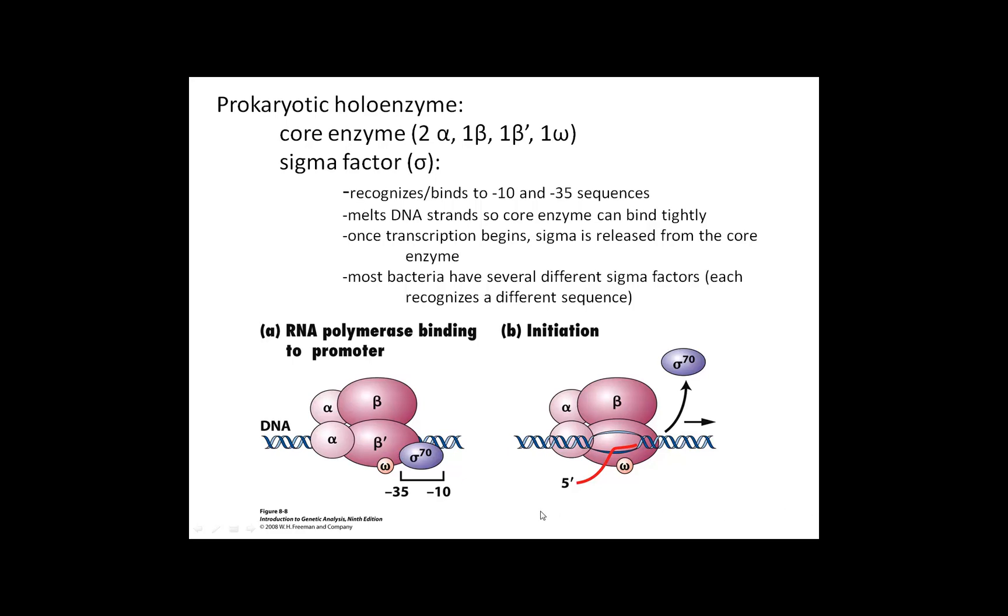Those are the DNA sequences that are important, the minus ten and the minus 35 sequences. Now let's talk about the proteins which bind to those sequences. There are two main parts: the core enzyme of RNA polymerase, which consists of two alpha subunits, a beta subunit, beta prime, and an omega subunit.